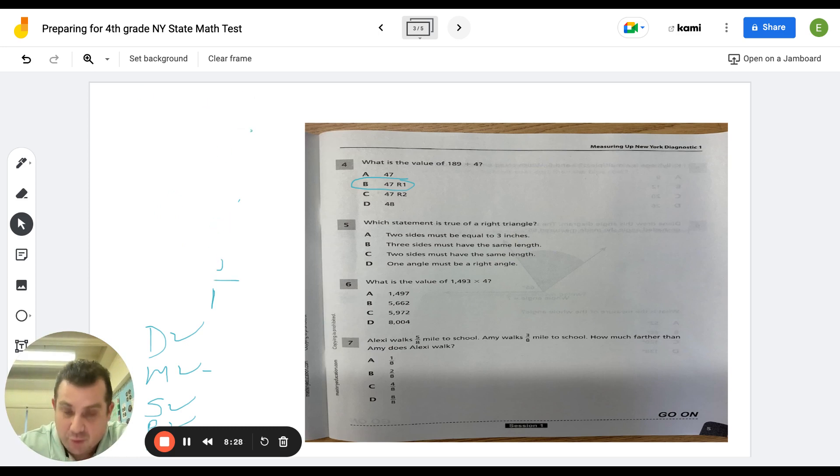Number five. Which statement is true about a right triangle? This we mentioned in class. What do we know about a right triangle? A right triangle. A right triangle must have a right angle. Otherwise, it's not a right triangle. Your answer is D. One angle must be a right angle. A, B, and C, they're all wrong. Two sides must have the same length. That's an isosceles triangle. B, three sides must have the same length. That's an equilateral triangle. Two sides must be equal to three inches. That's just another way of saying two sides are the same, which is isosceles. So your answer is D. A right triangle must have a right angle.